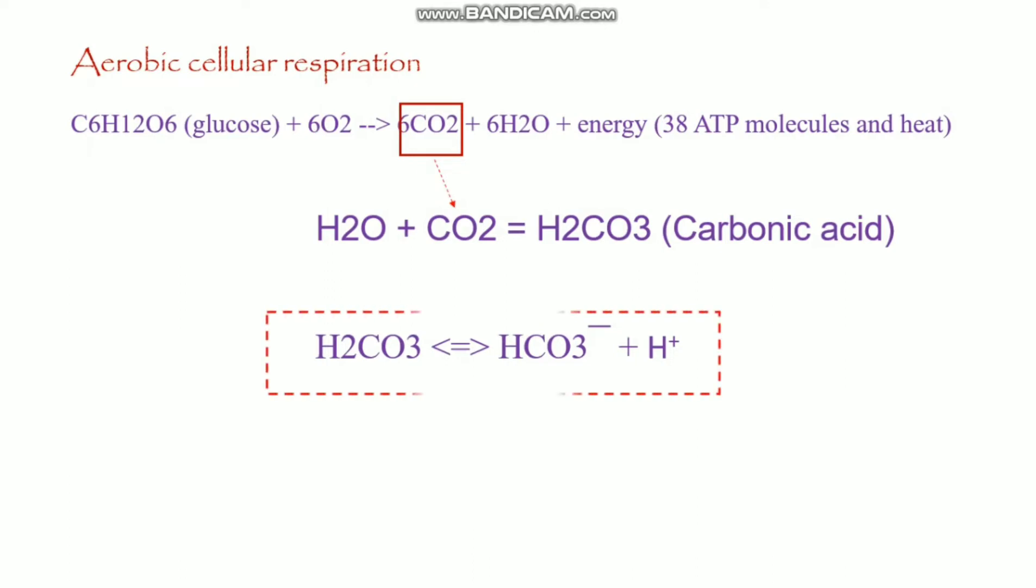This reaction is one of the many buffer systems in the human body. It resists dramatic changes in pH to allow a person to remain within the narrow physiological pH range. This bicarbonate ion is very important. It acts as a buffer to regulate and maintain pH inside the cells.